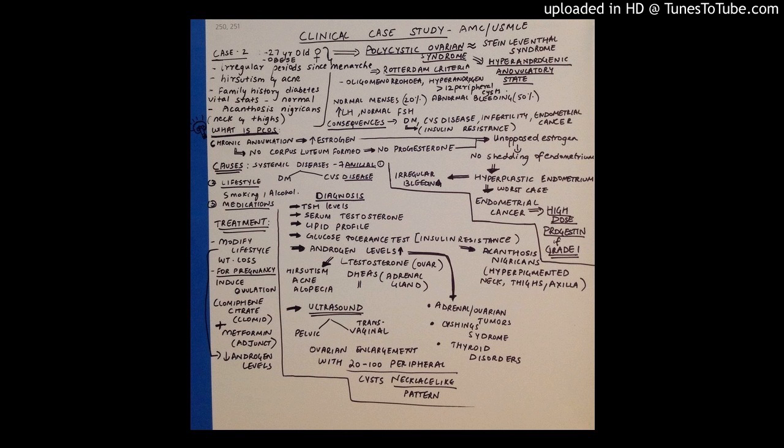Here there's no ovulation, so when there is no ovulation there's no corpus luteum that's formed, and in turn there's no progesterone. So your estrogen levels keep rising and estrogen remains unopposed by progesterone. Your unopposed estrogen is important, which is something that you find in PCOS.